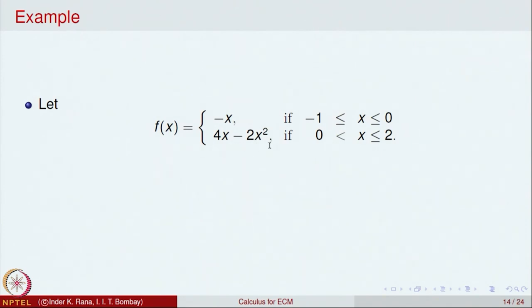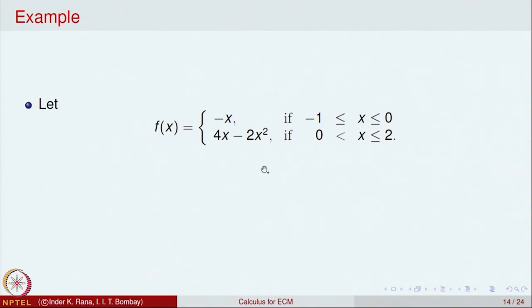For the right limit at 0, we take a sequence x_n converging to 0 from the right, so f(x_n) = 4x_n - 2x_n². As x_n → 0, both 4x_n and 2x_n² go to 0, so the right limit is also 0. Therefore the function is continuous on the closed bounded interval [-1, 2], which ensures it has an absolute maximum and minimum.